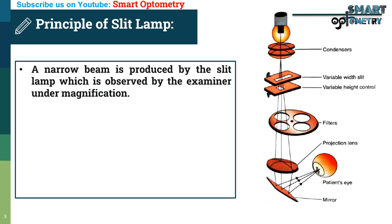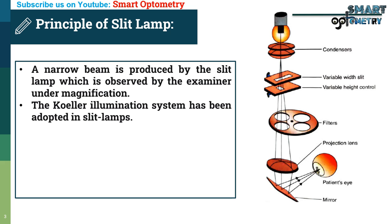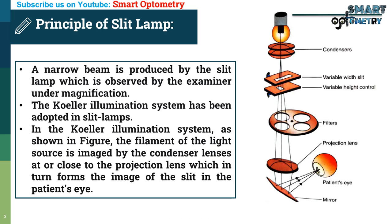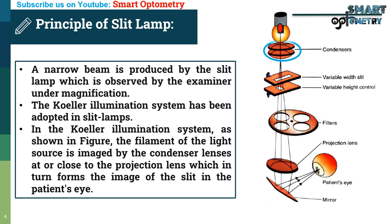Principle of Slit Lamp: A narrow beam is produced by the slit lamp which is observed by the examiner under magnification. The Koehler illumination system has been adopted in slit lamps. In this system, the filaments of the light source are imaged by the condenser lenses at or close to the projection lens, which in turn forms the image of the slit in the patient's eye. The image of the filaments is formed by the condenser lens at the projection lens, then the projection lens forms the image of the slit at the mirror, and from the mirror the slit falls into the patient's eyes.